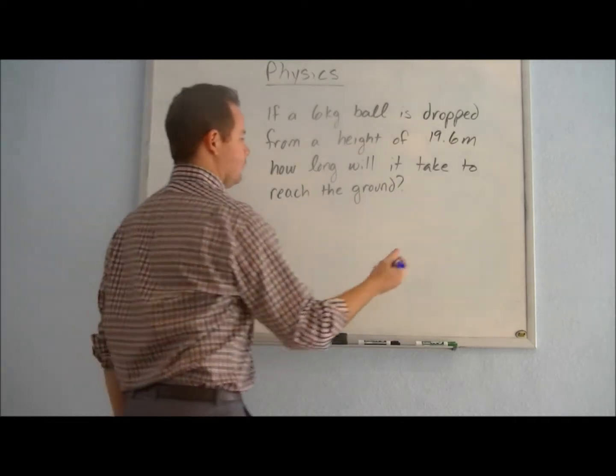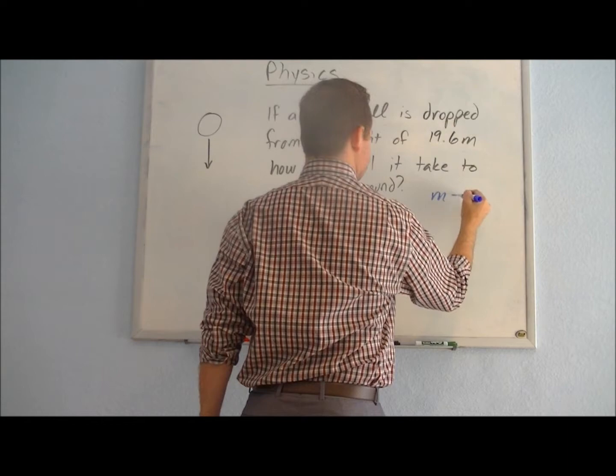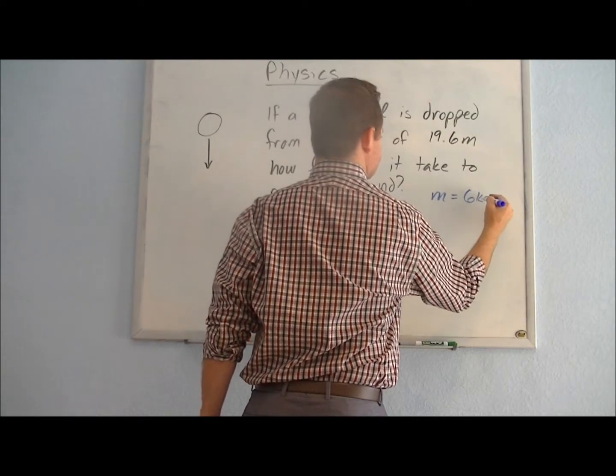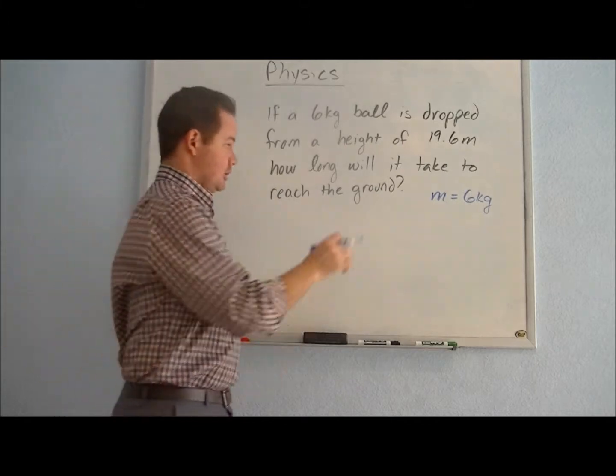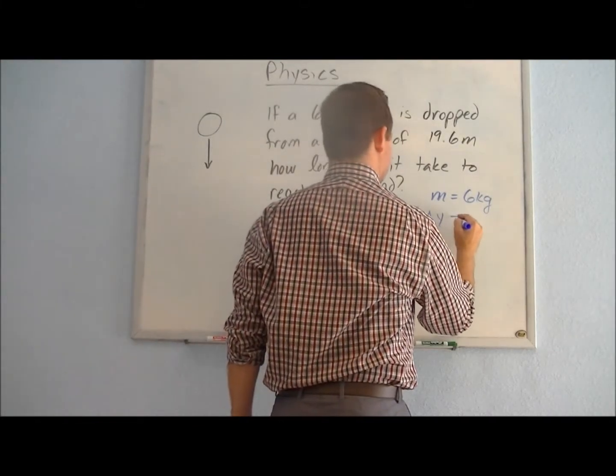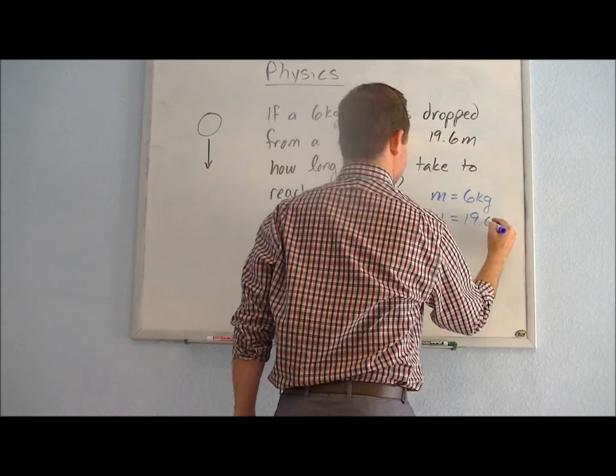So from this problem we know that the mass is 6 kilograms. We know that the height that it's falling, its change in height, or delta y, will be 19.6 meters.